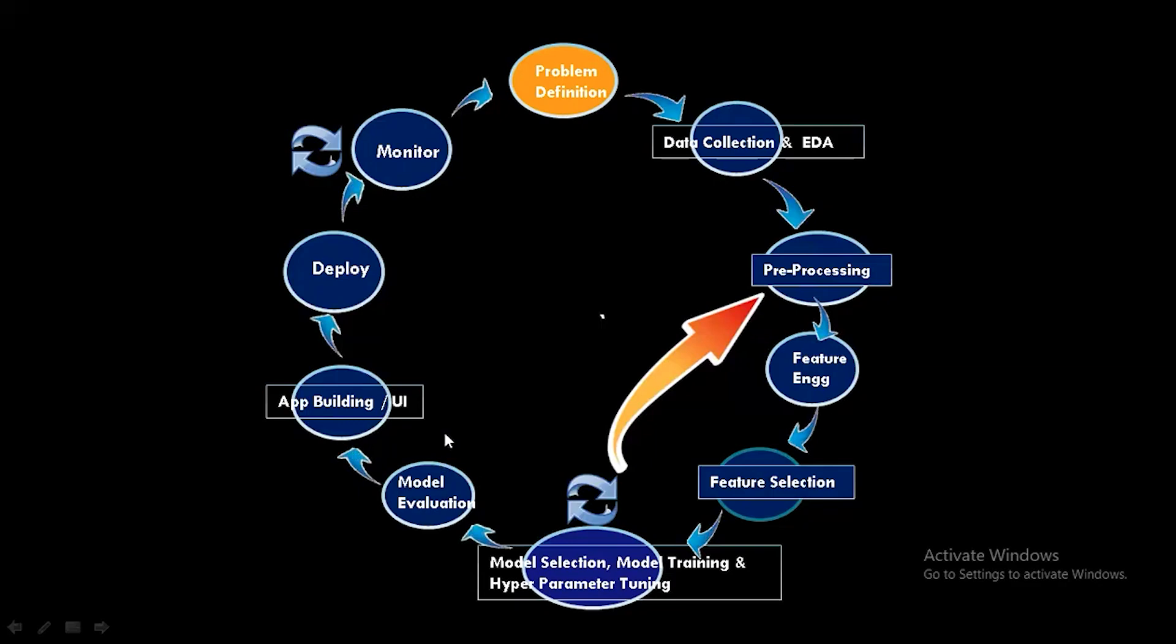Understand why the model made a prediction. There is a package called SHAP. The SHAP values show, for example, the days since last purchase is the top factor. The business teams can trust models more when they understand why predictions are made.